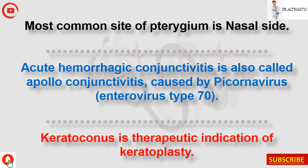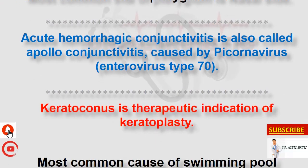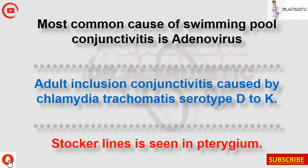Acute hemorrhagic conjunctivitis is also called Apollo conjunctivitis, caused by Picornavirus, enterovirus type 70. Keratoconus is a therapeutic indication of keratoplasty. Most common cause of swimming pool conjunctivitis is adenovirus. Adult inclusion conjunctivitis is caused by Chlamydia trachomatis serotypes D to K. Stocker line is seen in pterygium.